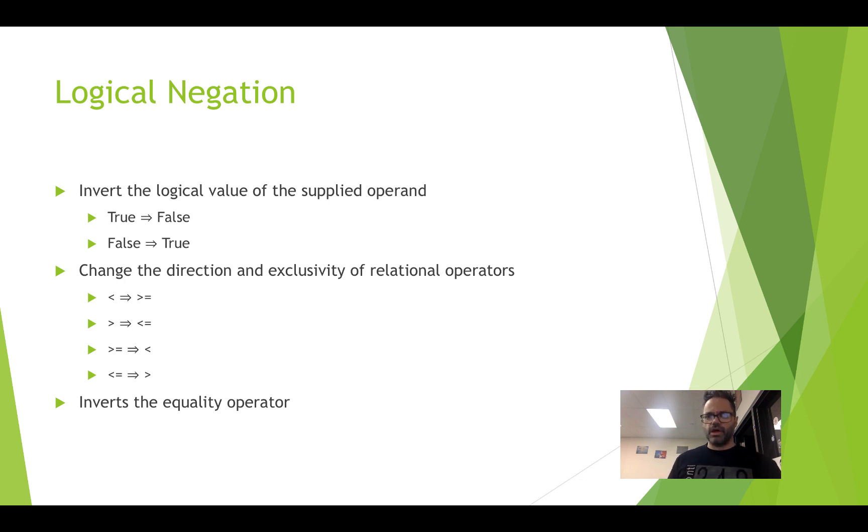Now, let's talk about logical negation. Logical negation is the not operator. We're going to take a true value, turn it to false, or a false value, and turn it to true. However, a logical negation, the not symbol, can also invert the direction and the exclusivity of a relational operator. So if you have a less than operator, it turns into greater than or equal to. A greater than turns into less than or equal to, so it goes from exclusive to inclusive, but facing the other way. The greater than or equal to turns to less than only, so it goes from inclusive over to exclusive. And the same with there. It also inverts the equality operator from equals equals to not equals. Pretty basic.